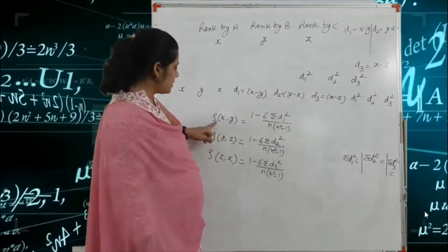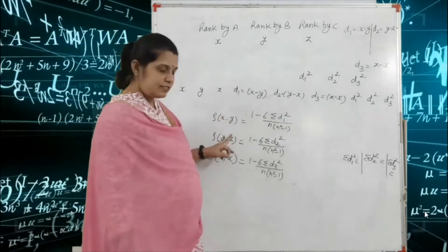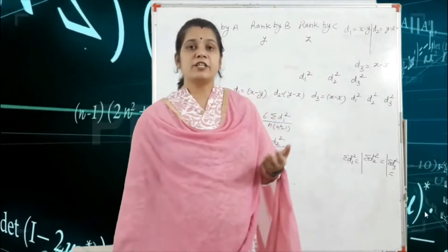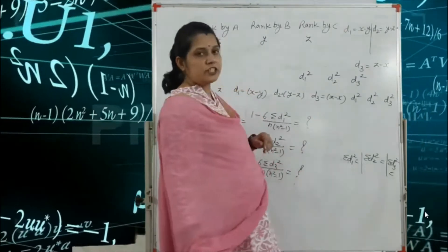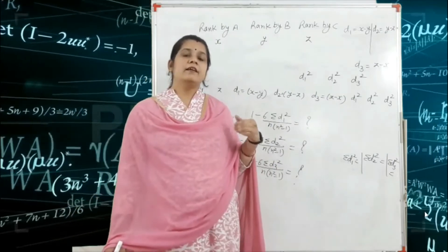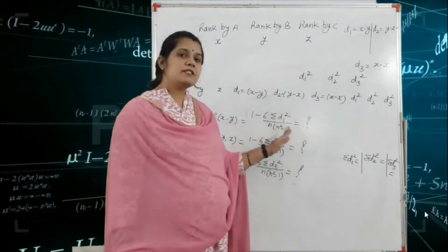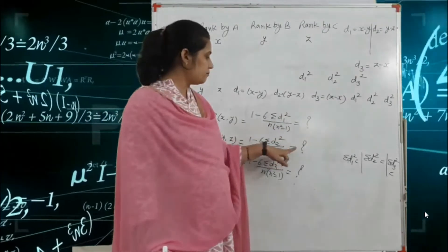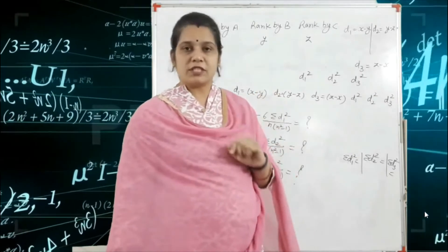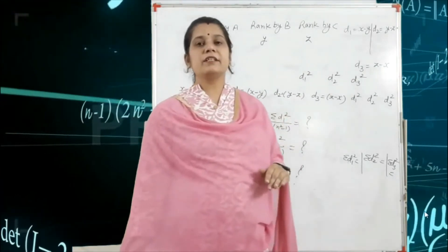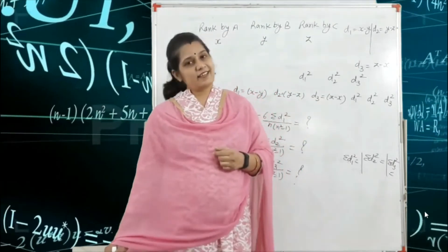We find the correlation between each pair of judges. If the question asks to find the most likely agreement, find the maximum value among the three rho values — that is your final answer. For example, if the second value is maximum, we say that judges B and C are most in agreement. This is the pattern when a question is given with three individuals or three judges. I will continue this topic in our next lecture. Thank you for watching this video.